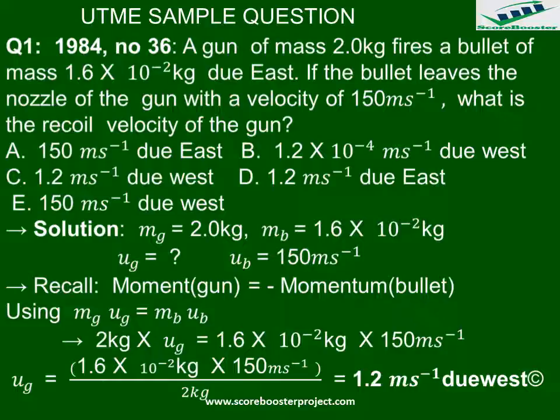Let's go to the UTME sample question from 1984, number 36. A gun of mass 2.0 kg fires a bullet of mass 1.6 × 10⁻² kg due east. If the bullet leaves the nozzle of the gun with a velocity of 150 m/s, what is the recoil velocity of the gun? Options: A) 150 m/s due east, B) 1.2 × 10⁻⁴ m/s due west, C) 1.2 m/s due west, D) 1.2 m/s due east, E) 150 m/s due west.